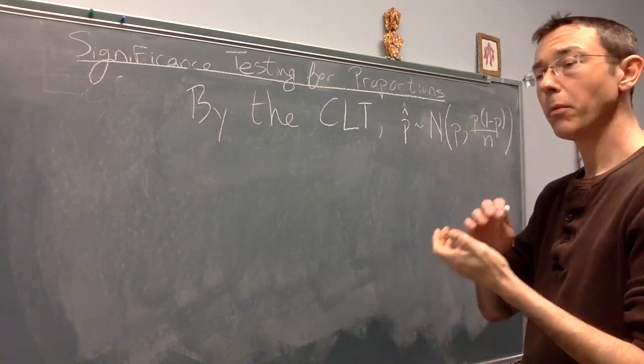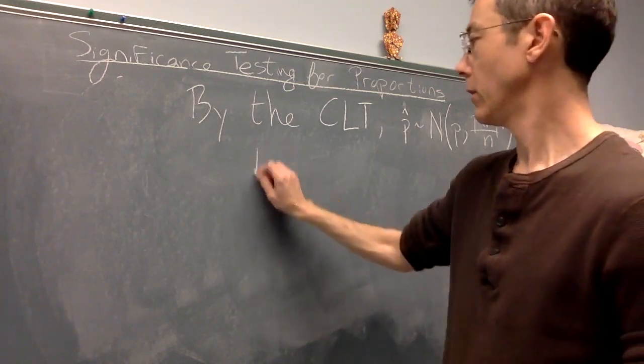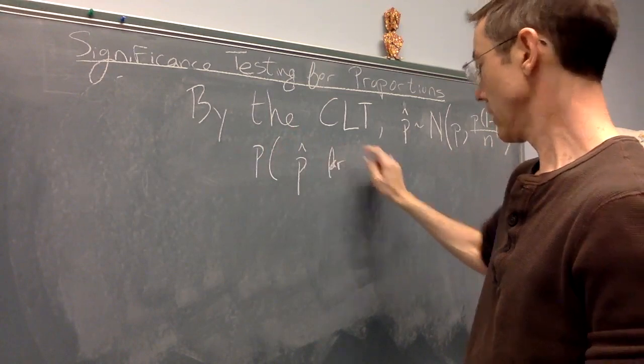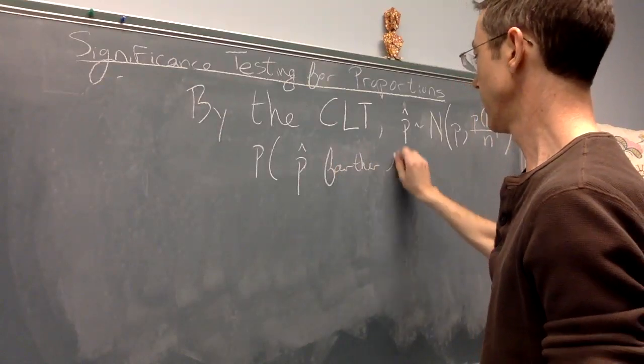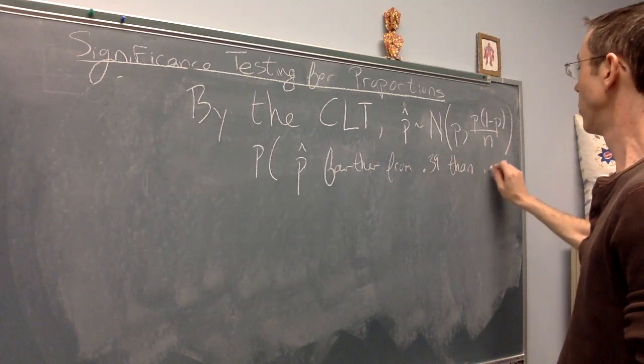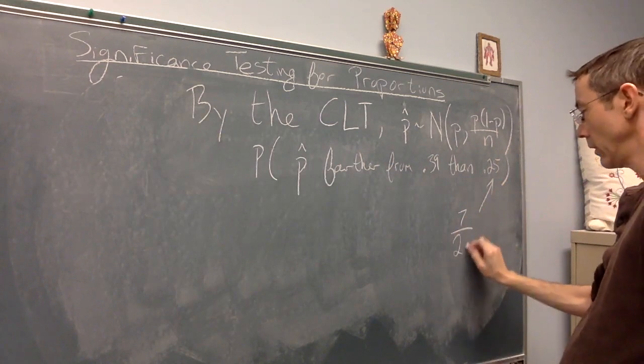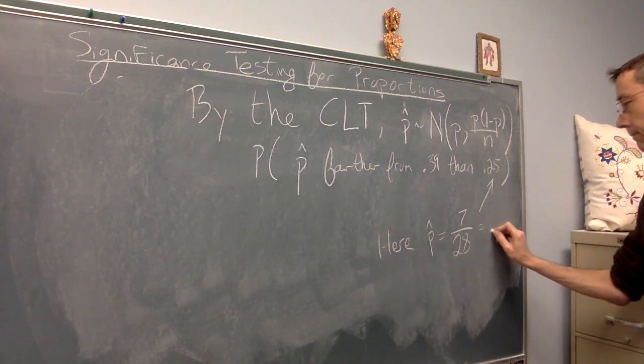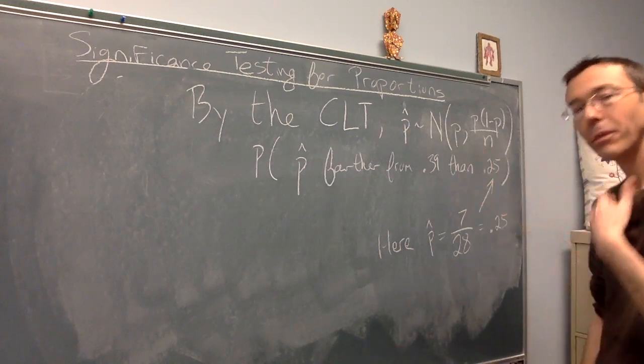What we need to do now is to find the probability of getting a p hat at least as extreme as the one we actually got. So we need the probability of getting by random chance a p hat farther from, in this case, 0.39 than 0.25. And 0.25 came from the fact that we had seven successes in 28 trials. One quarter. Okay, to evaluate this probability statement, let's do z-scores.